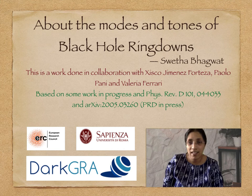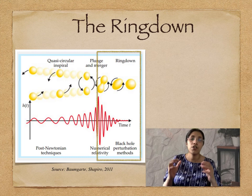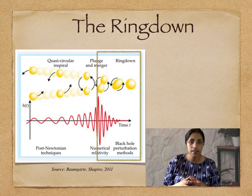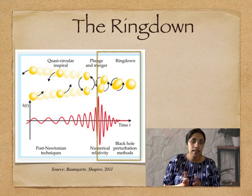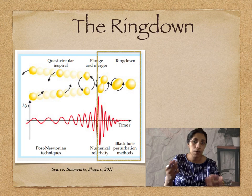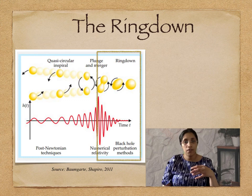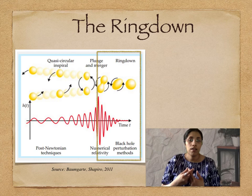When two black holes inspiral around each other and merge, they first form a distorted black hole, which then rings down and settles into a final stable state, which according to GR is a black hole. In this process, it emits gravitational waves known as the ringdown. The ringdown comprises the last few milliseconds of a binary black hole signal, and this part of the signal probes the spacetime very close to the black hole and contains imprints of the nature of the black hole, as well as the dynamics of the spacetime close to it.